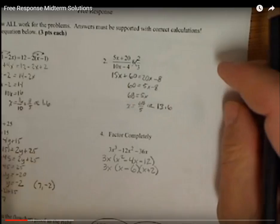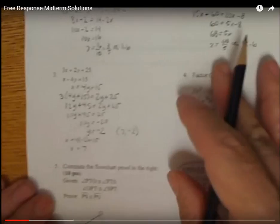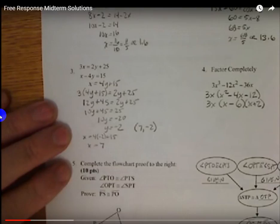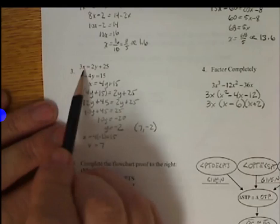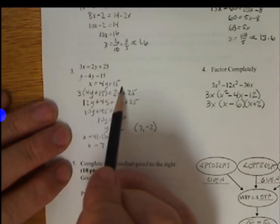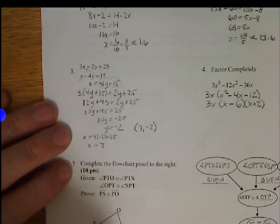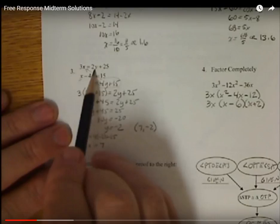For our system problem, we have two different methods. You can use elimination or you can use substitution. This one sits up best for substitution because I can solve for x in this equation. Then replace it here. So my first step was I added 4y. So I have x equals 4y plus 15. I took the 4y plus 15 and then plugged it into the x up here. So I have three times in parentheses 4y plus 15 is equal to 2y plus 25. Distribute. I get 12y plus 45 equals 2y plus 25.